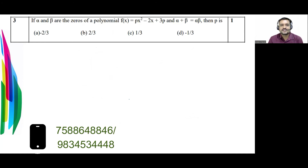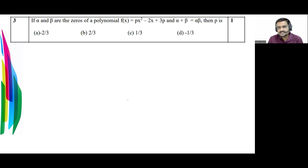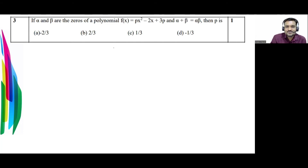The next question is from the topic Polynomials. If alpha and beta are the zeros of the polynomial f(x) = px² − 2x + 3p, and alpha + beta = alpha × beta, then what is the value of p? We are given that the sum of zeros equals the product of zeros.